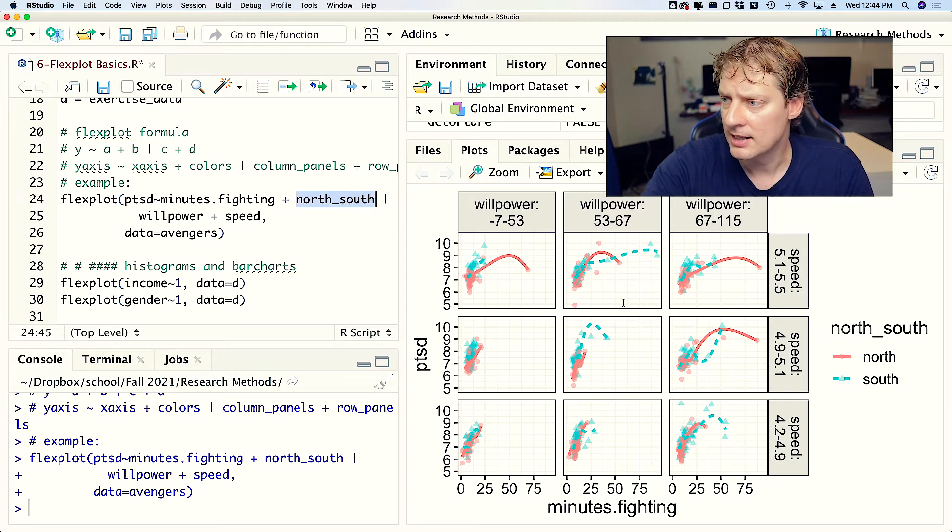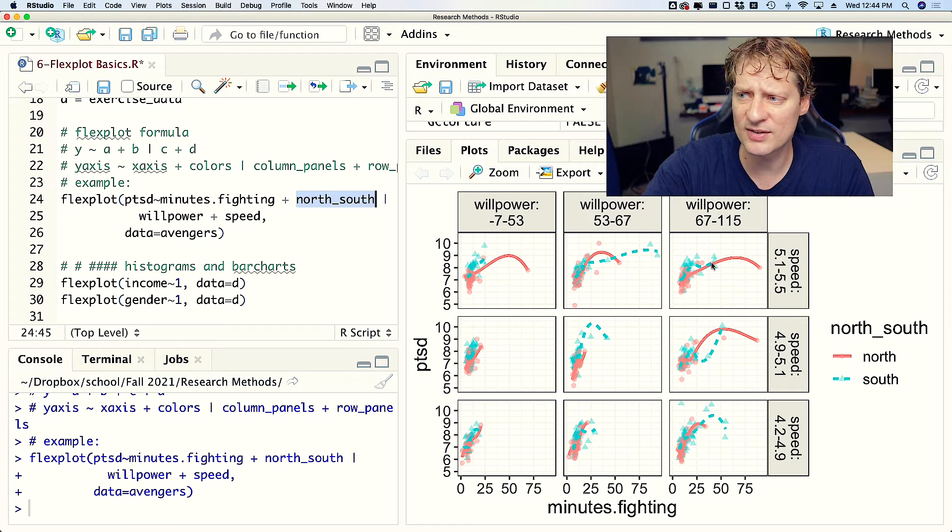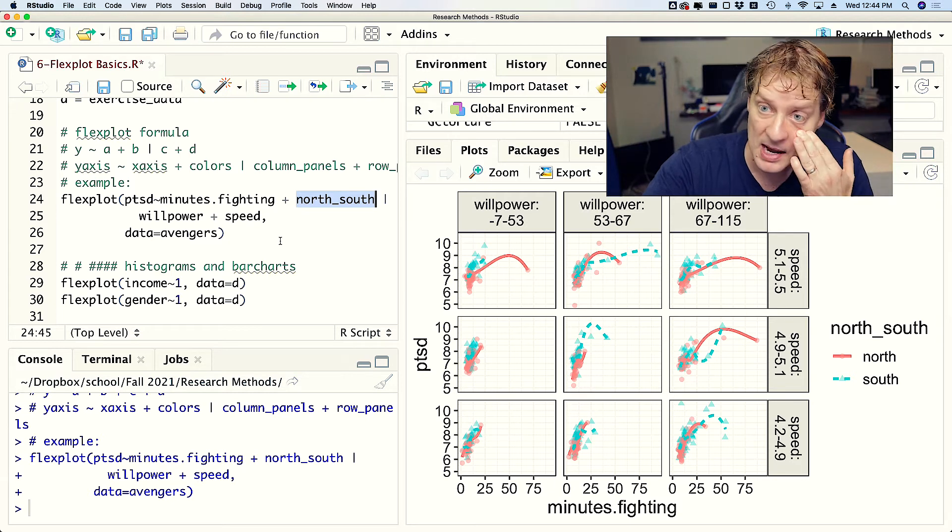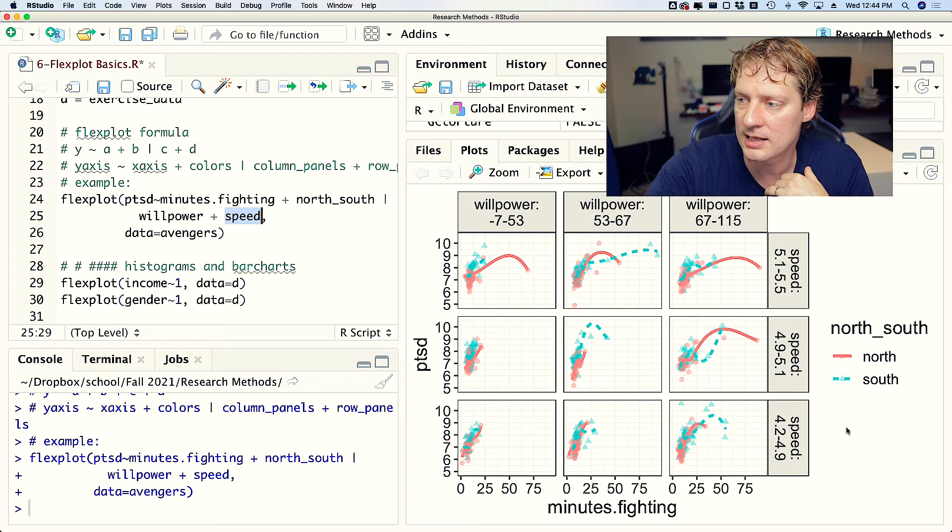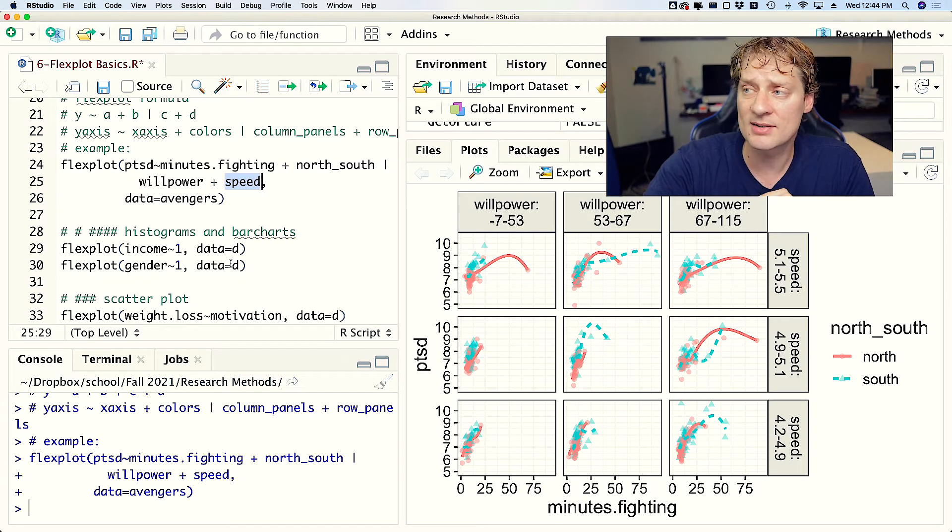And then the very next variable, north-south, is separated into colors, each of which has also a different line, either dash versus solid, as well as symbols, triangles versus circles. And then after the vertical pipe we've got our two paneled variables, which is willpower, which is going to be paneled in the columns, and then speed, which is paneled in the rows.